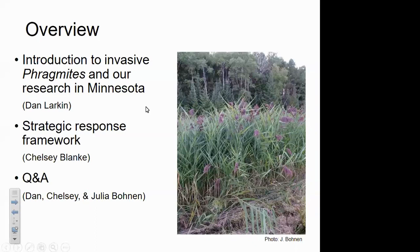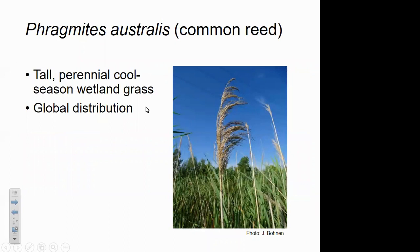I'll start off giving a brief overview of invasive Phragmites and a synopsis of our research to date in Minnesota, then turn it over to Chelsea who will present on the strategic response framework we've developed, followed by about a half-hour Q&A with the three of us. Our topic today is Phragmites australis, or common reed — a tall perennial cool-season wetland grass with a global distribution found on every continent except Antarctica.